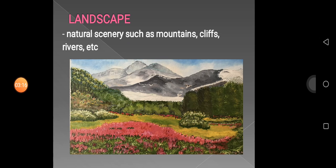The second one is Landscape. Landscape is a natural scenery, such as mountains, cliffs, rivers, and so on. Below is an example of landscape art.